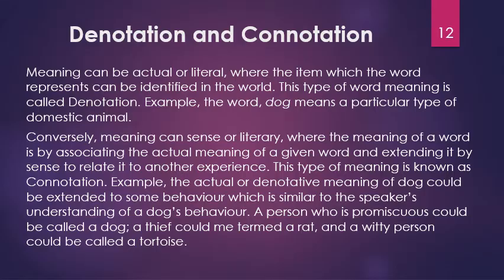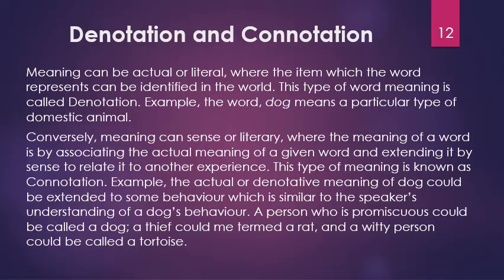Meaning can be literal or figurative — a word can have a meaning from its primary reference, that is what it points to in the physical world. For example, what a small child of say three years old will understand from the word 'dog' is the animal. But 'dog' can also connote a person who is acting as some kind of agent, or someone who is a kind of slave or subordinate — that is the connotation of the word 'dog'.